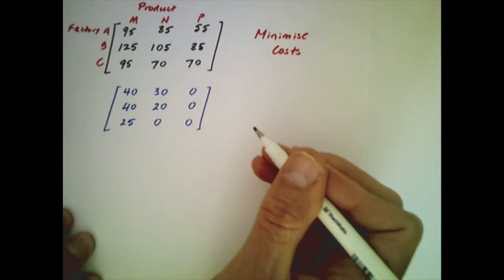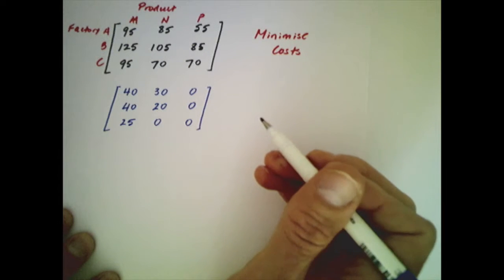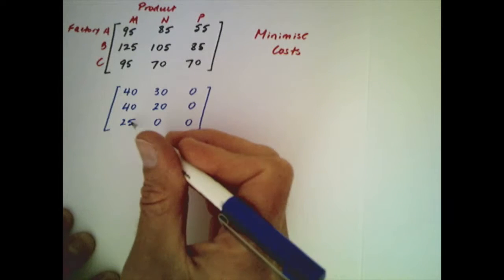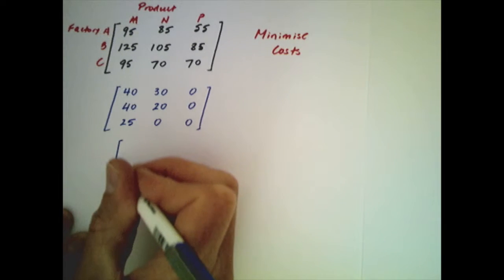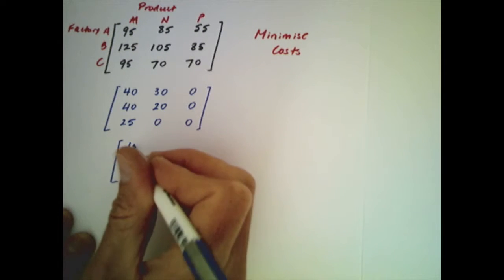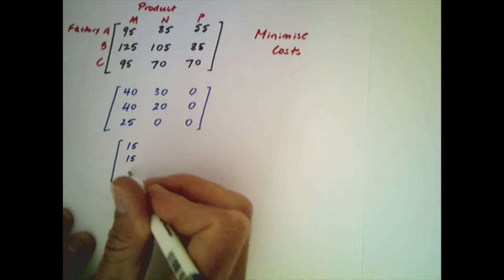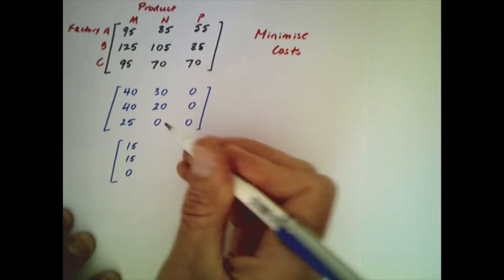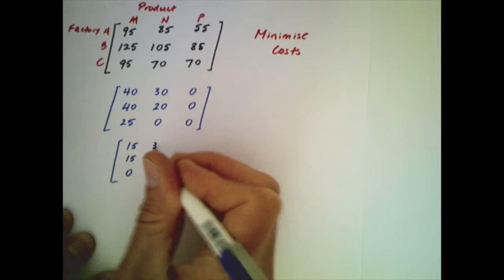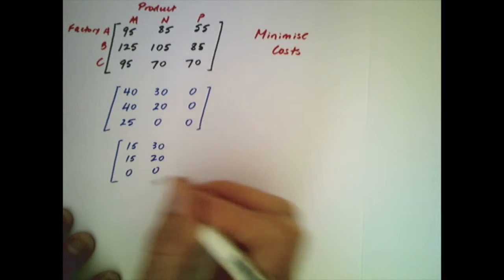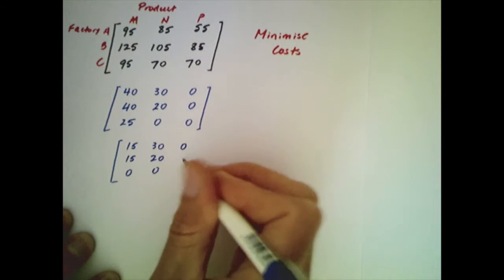Once that step's done we then look at each column. So we're going to subtract the smallest entry from column one which is 25 and we do that for each entry in that column. Column two and three are a lot easier because zero is the smallest entry so all the entries in column two will remain the same and likewise for column three.